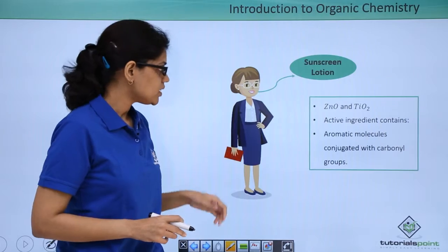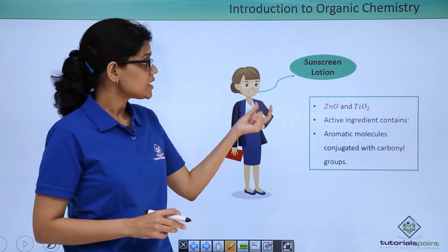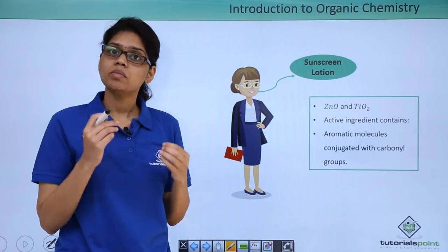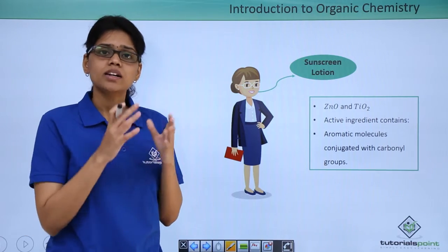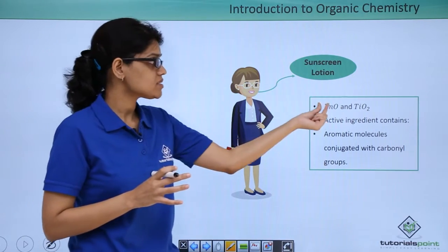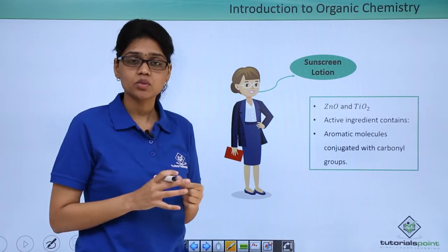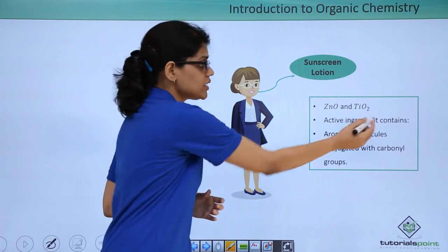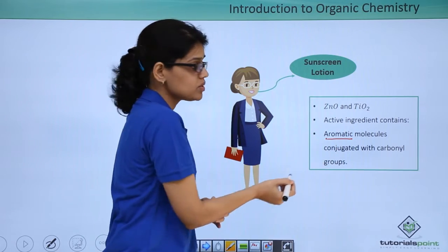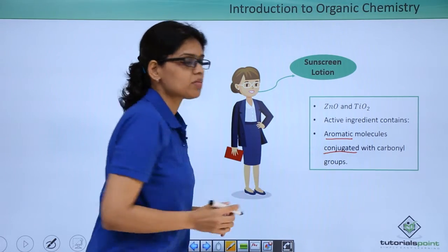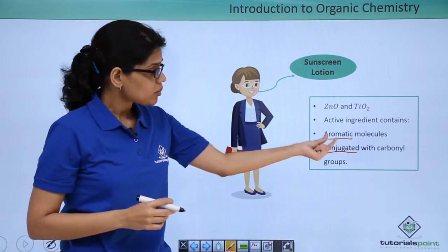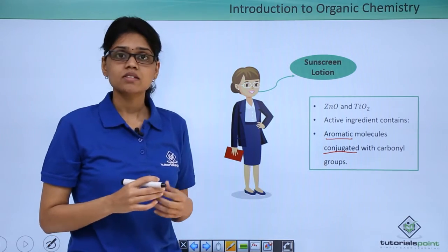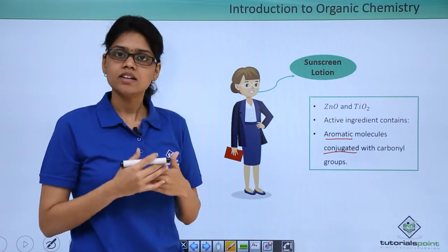Now let's look at this woman a little more closely. We can see that she could be using a particular brand of sunscreen lotion. A typical sunscreen lotion composition is mainly zinc oxide and titanium oxide TiO2, which are inorganic. But it also has active ingredients called aromatic molecules in conjugation with carbonyl groups. What is aromaticity and what is conjugation we will study in detail in our next topics.